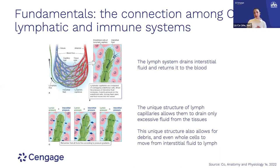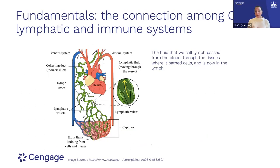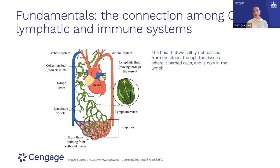That allows for a bit of structure-function without requiring a terrible amount of prep. That lymph — a continuation of the fluid that was interstitial fluid, a continuation of the fluid that was blood plasma — is now going to be added back to the cardiovascular system to maintain pressure.